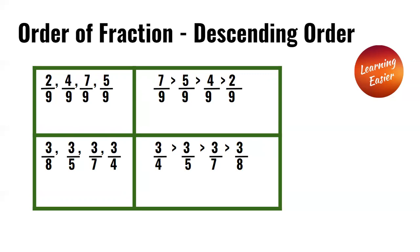Ascending means smallest to largest. Seven over nine is the largest because seven is greater than five, four, or two. Since we have all the same denominators: seven over nine is greater than five over nine, which is greater than four over nine, which is greater than two over nine.